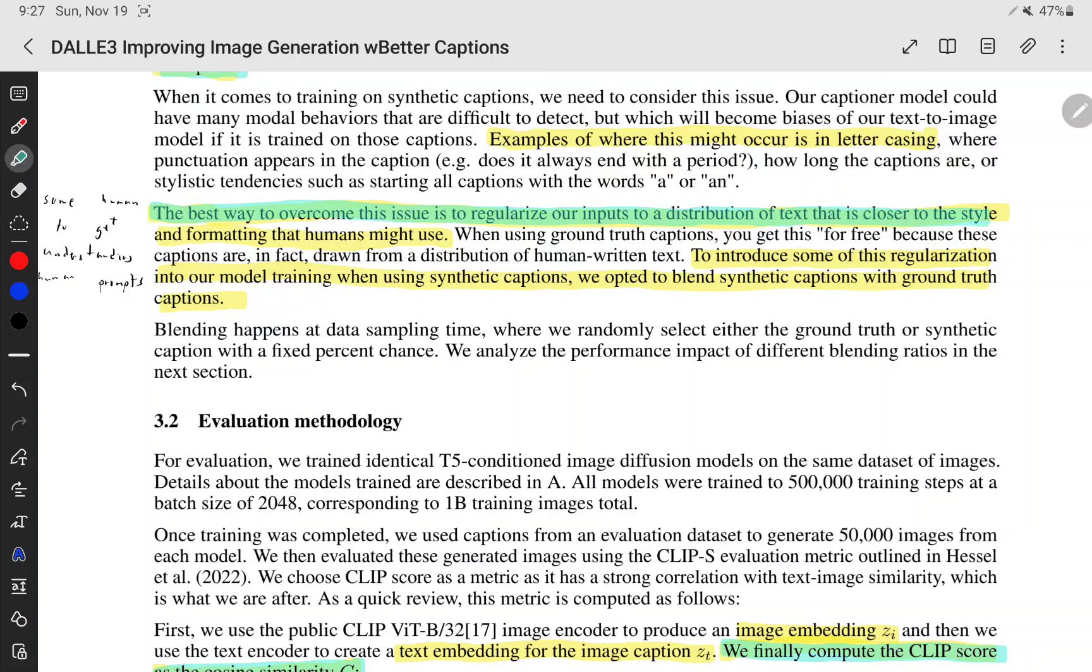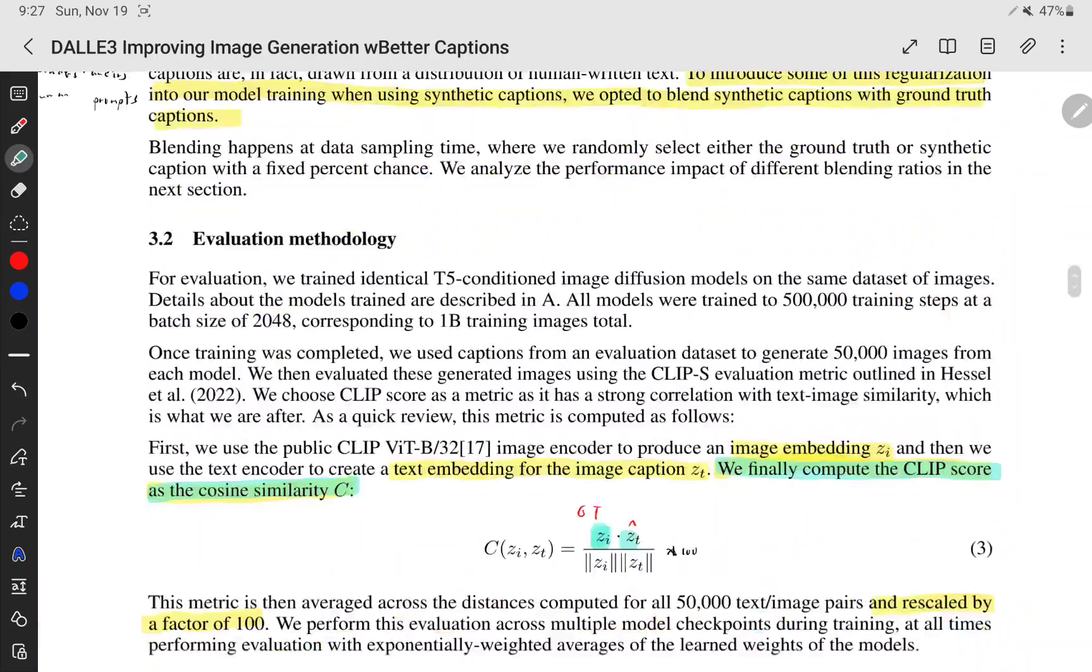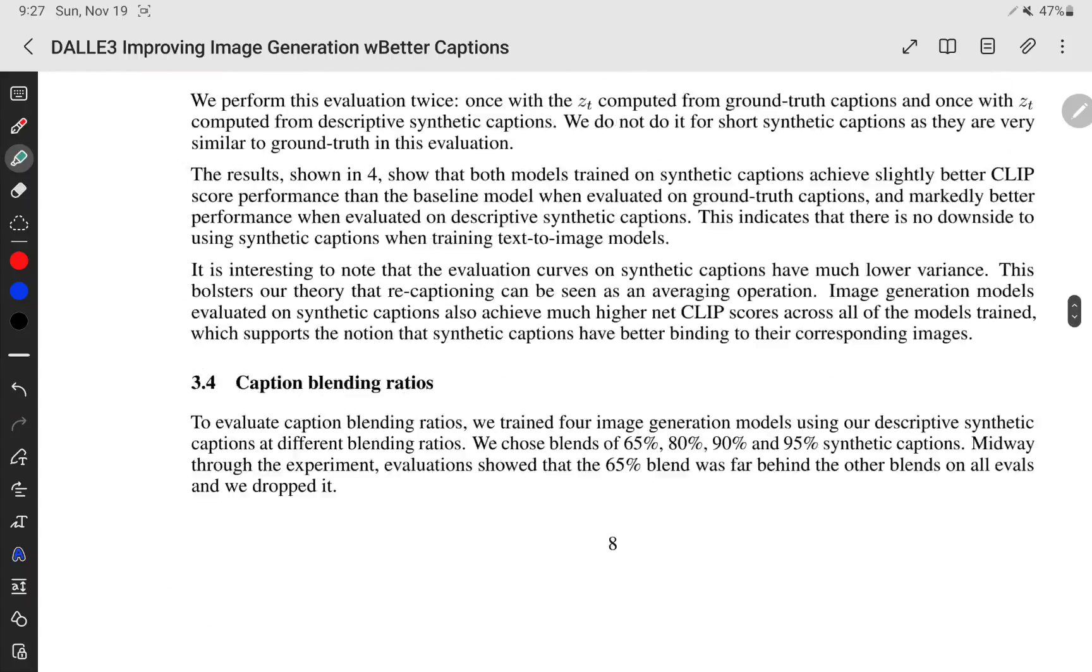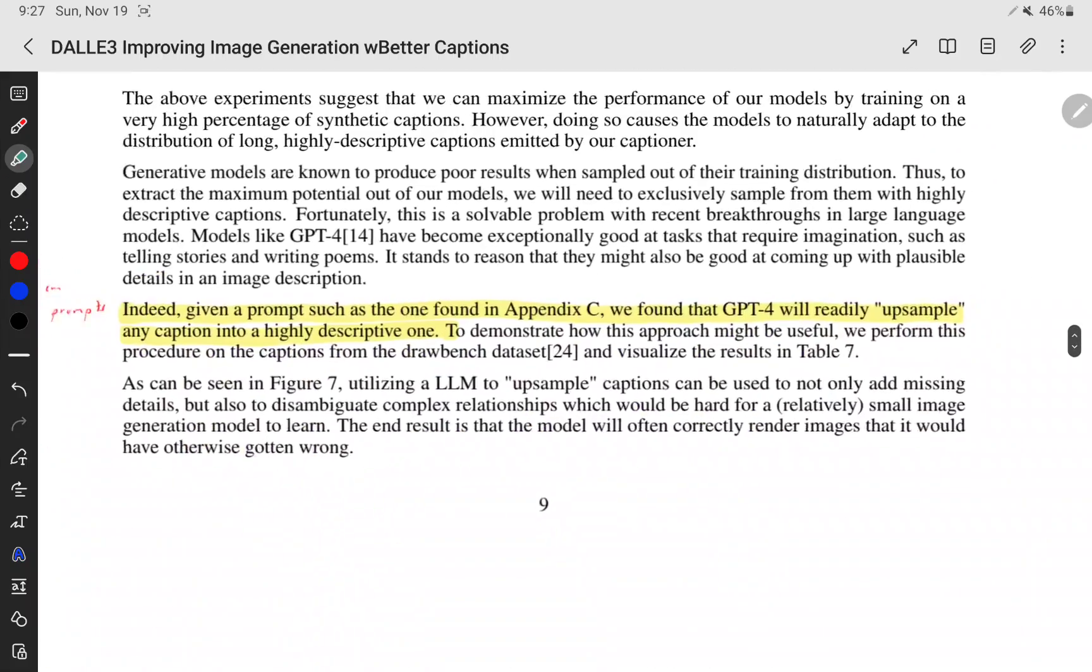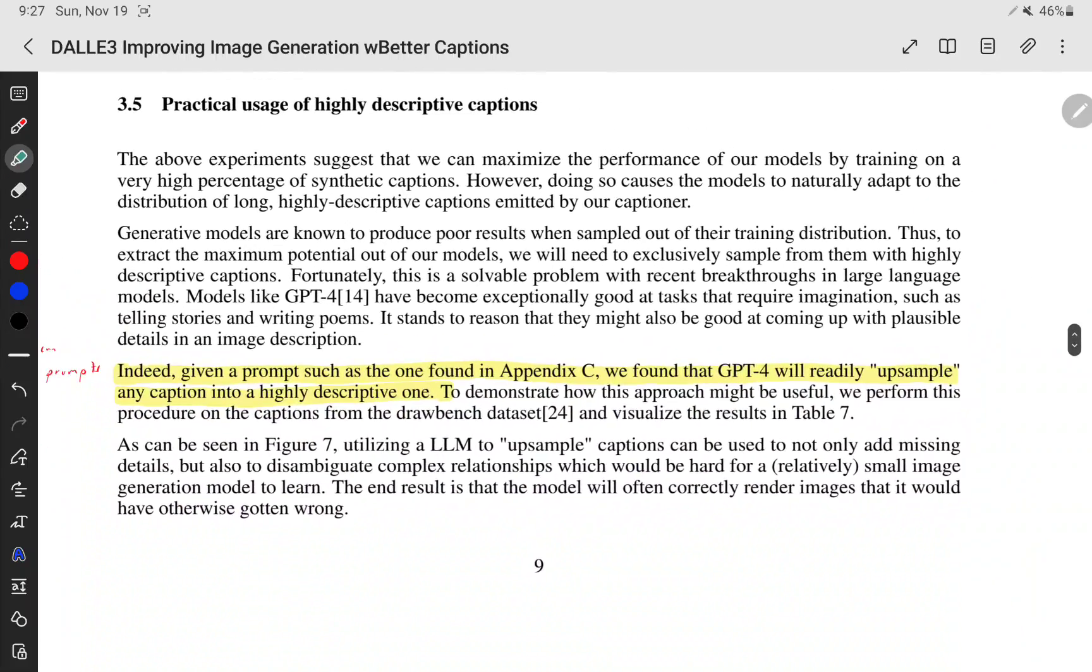The best way to overcome this issue is to regularize our input to a distribution of text that is closer to the style and formatting that humans might use. And they literally just throw in some of the human data, even though it sucks. Even though it's not as good. They use 95% synthetic captions. So you want a lot of synthetic captions, but they claim that too many doesn't do too well. And that's the CLIP score. Doing too many synthetic captions, like 100%, like humans wouldn't be able to prompt that, even though it may get a high CLIP score.